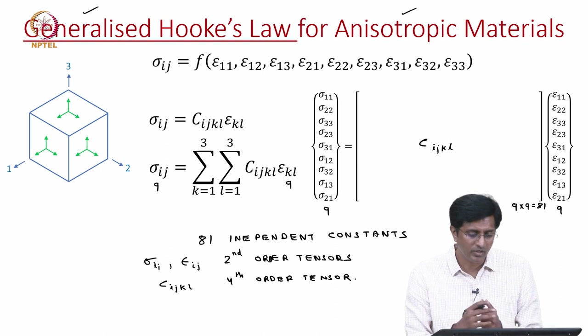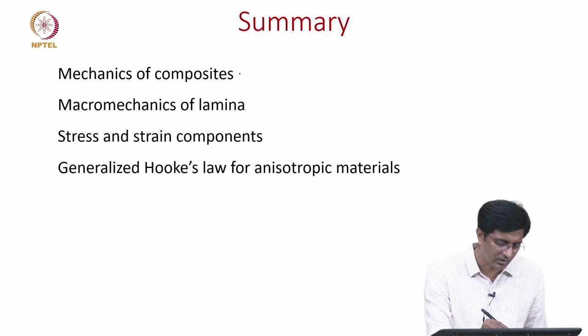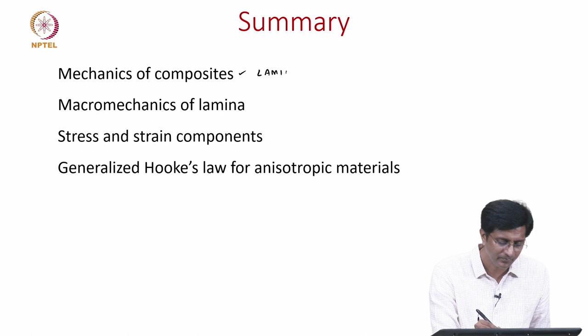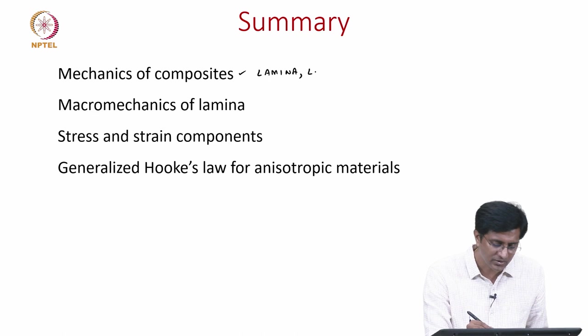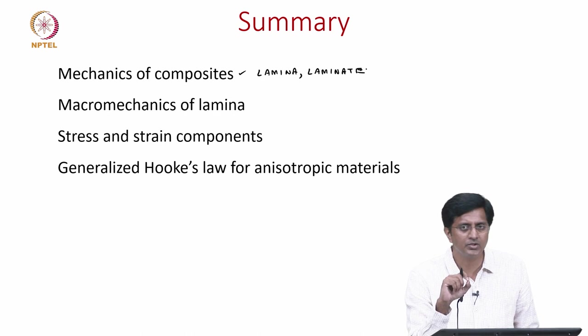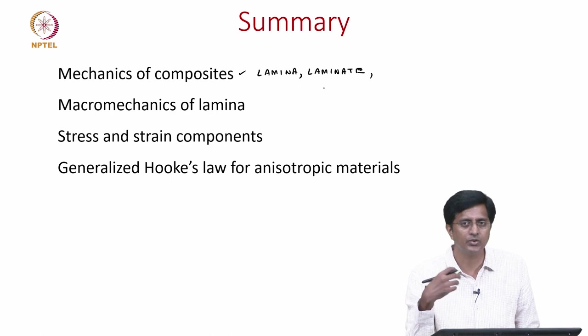What we have achieved is to show the relation between stress and strain for the most general anisotropic material. To summarize this video: we first started by saying what are the different aspects we need to look at when discussing about mechanics of composites. We said we need to discuss about the mechanics of the lamina — covering both micro mechanics and macro mechanics of the lamina — and then we also need to discuss about the mechanics of the laminate where we are interested in the macro mechanics. Specifically in this course we will be focusing on the classical laminate theory, and once we have this understanding we can use it to look at the design of composite structures.